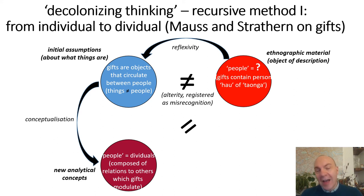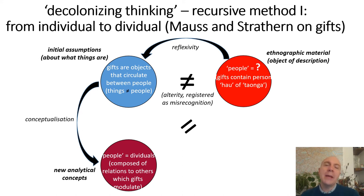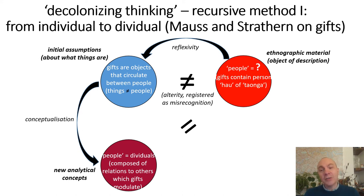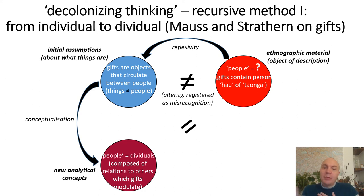The only way you can describe ceremonial gift exchange in Papua New Guinea, for Strathern, is to shift your very definition of what might count as a person — from seeing people as separate from each other to seeing people as composed out of all of the relationships into which they enter. Gift giving is a way of modulating this composition of persons. I am composed through my relationship with you, and when I give you a gift, I highlight the composition of my being as a person in relation to you.